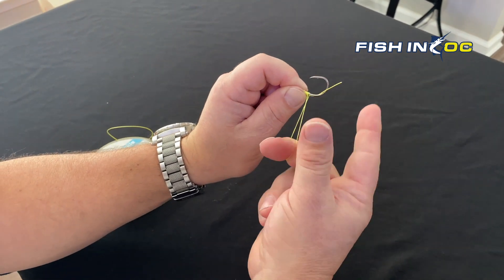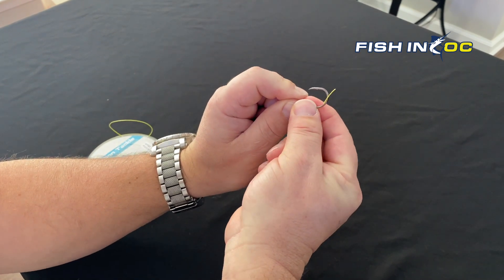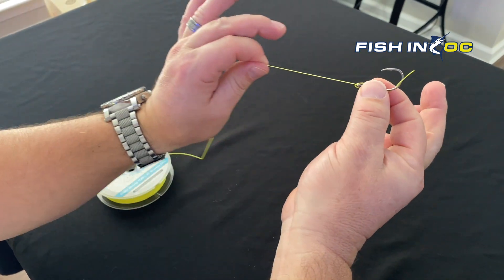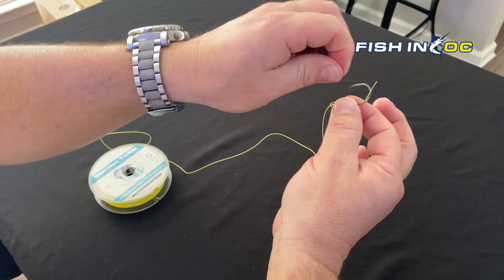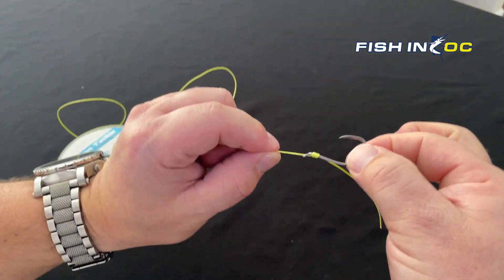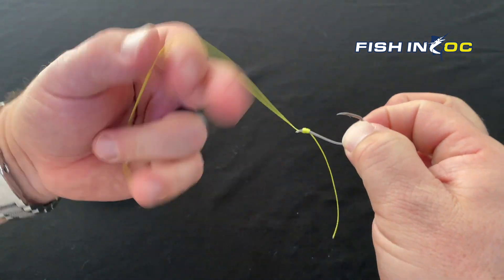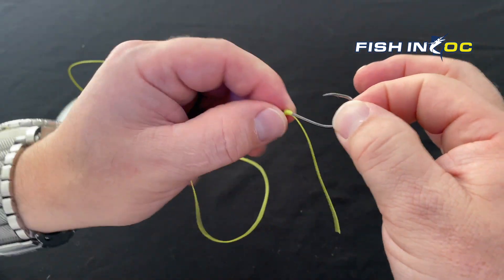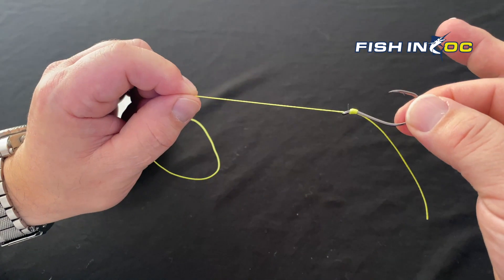Now I'm going to hold all this tight. I'm going to pinch the snell with these two fingers and pull my main line tight, and then I'm going to pull my tag end tight, and it's just as simple as that. Beautiful snell knot. Slide it up the shank of the hook so it butt ends into the eye, and there you go. Ready to roll.